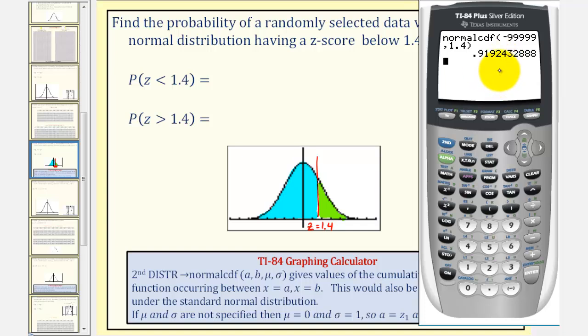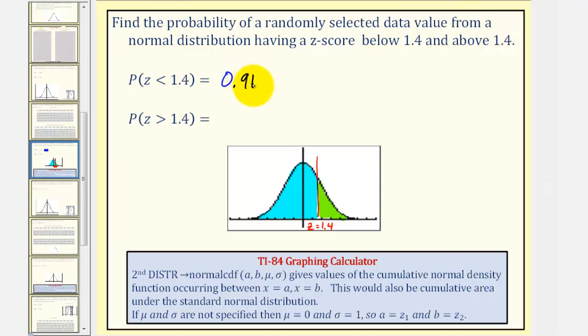To four decimal places, the probability that z is less than 1.4 is approximately 0.9192. Therefore, the probability that z is greater than 1.4 would be 1 minus 0.9192, or 0.0808.